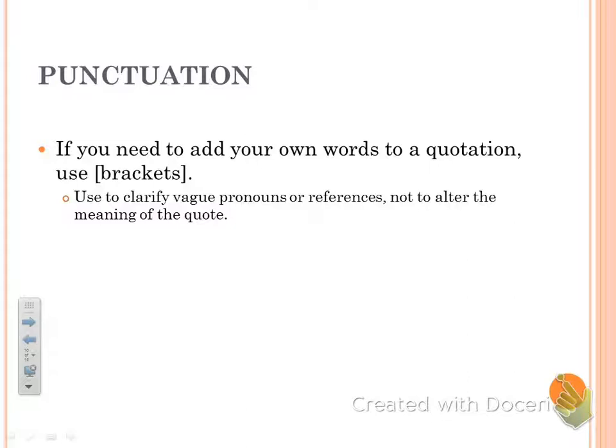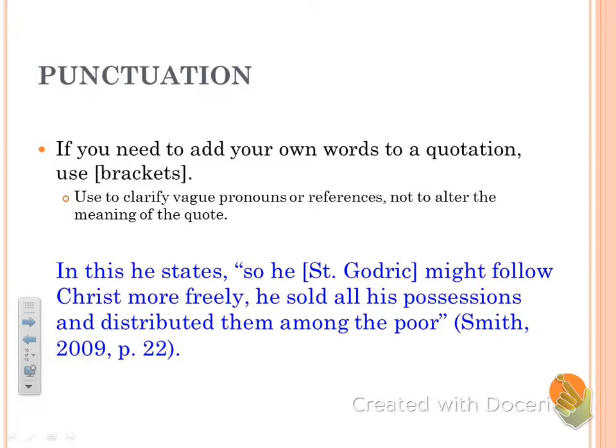You can use brackets in your quotations to help clarify things — vague pronouns or references that aren't clear based on what's being said in the quote, as long as you don't alter the meaning. For example, if the quote says 'he states, so he...' — who's he? Brackets are used to clarify, like inserting 'St. Godric.' You don't even need the pronoun 'he' there; once you put brackets in, you can replace the unclear pronoun or reference, and all will be right in the world.